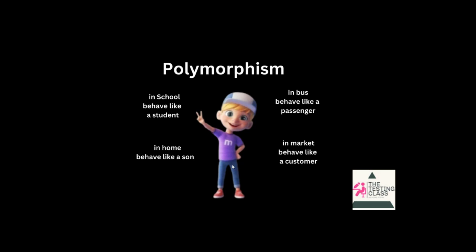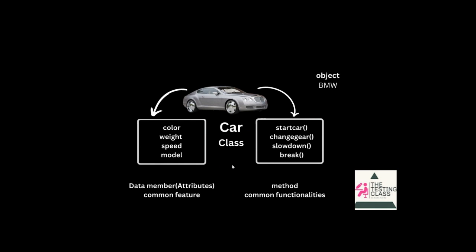Polymorphism. As you can see, in a school one behaves like a student, in home behaves like a son, in a bus behaves like a passenger, in a market behaves like a customer. So one person has multiple forms.